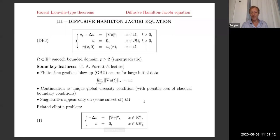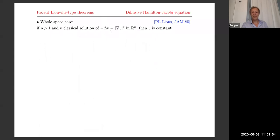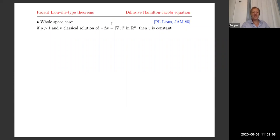The related elliptic problem for the Liouville property is the half-space problem without time — it is really elliptic. I will explain why the elliptic version is enough for what we want to do. For the whole space elliptic Hamilton-Jacobi case, there is a famous result of Pierre-Louis Lions from 1985: any classical solution for any power P greater than 1 in the whole space has to be constant. What about the half space? This is a result we obtained in collaboration with Roberta Filippucci and Patrizia Pucci, which just appeared two months ago.